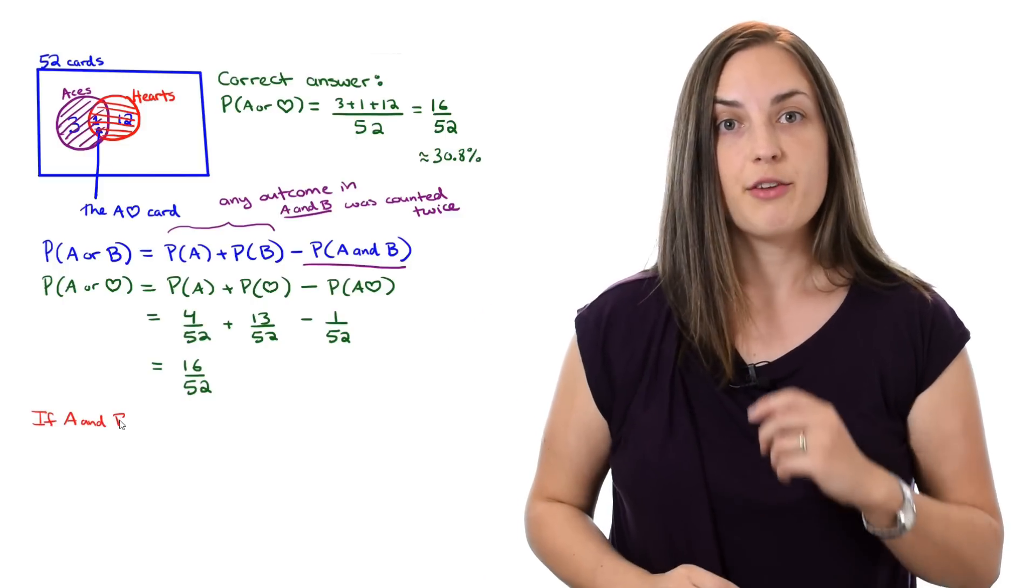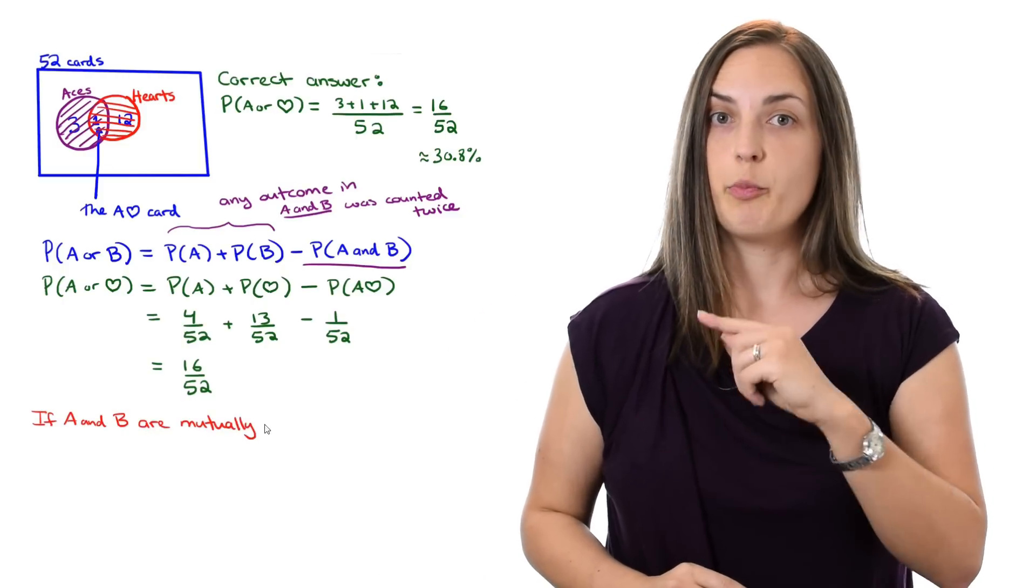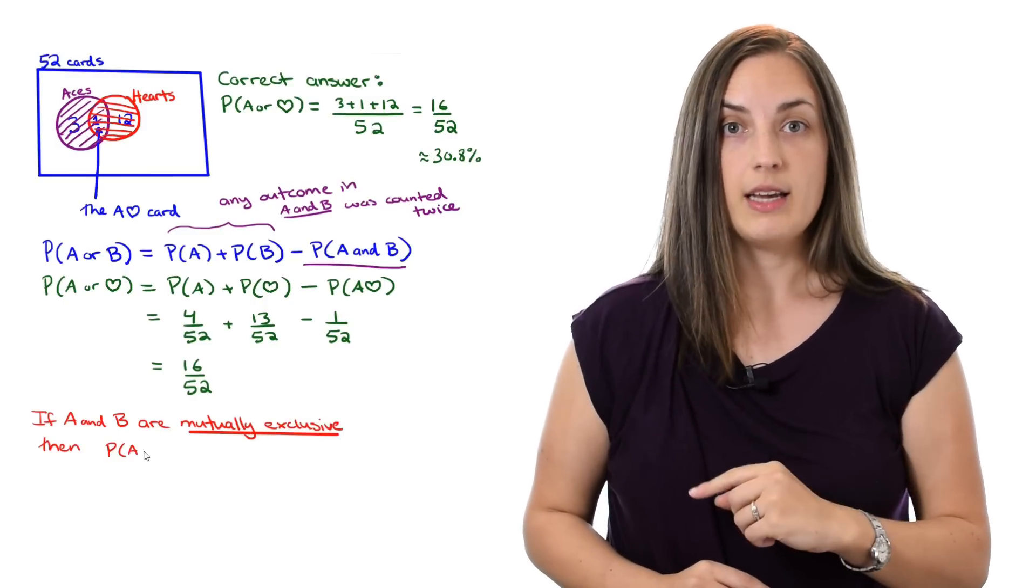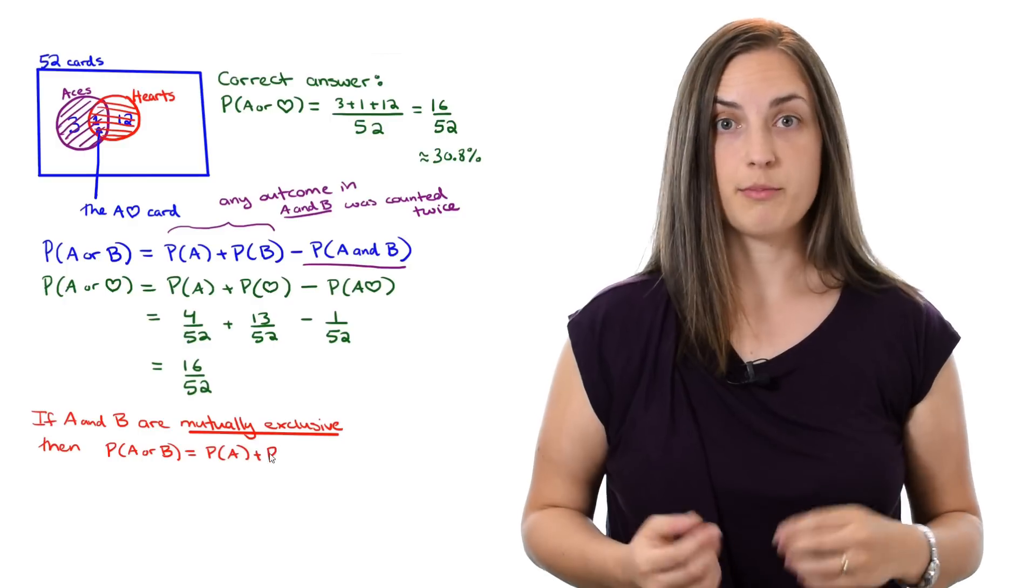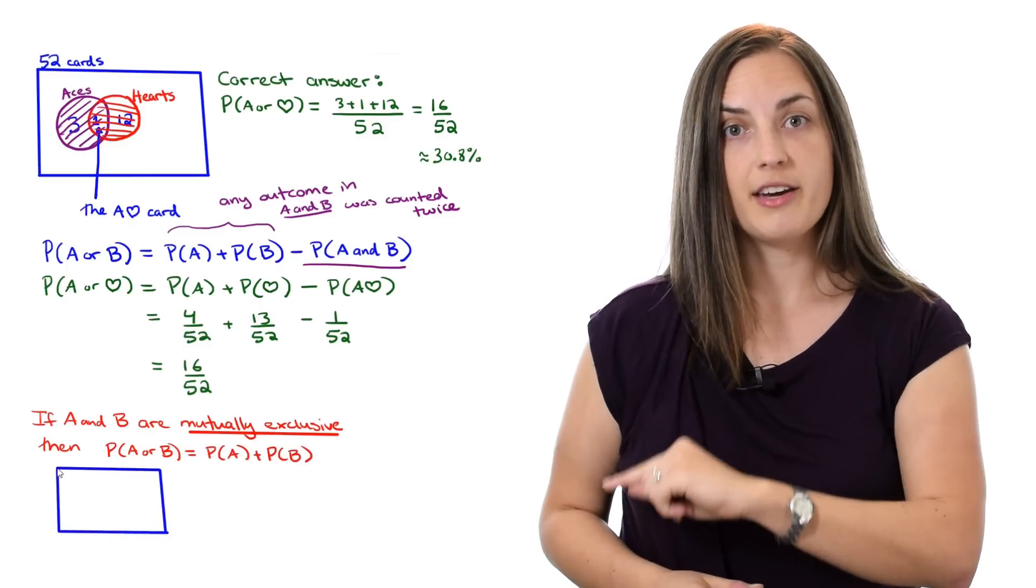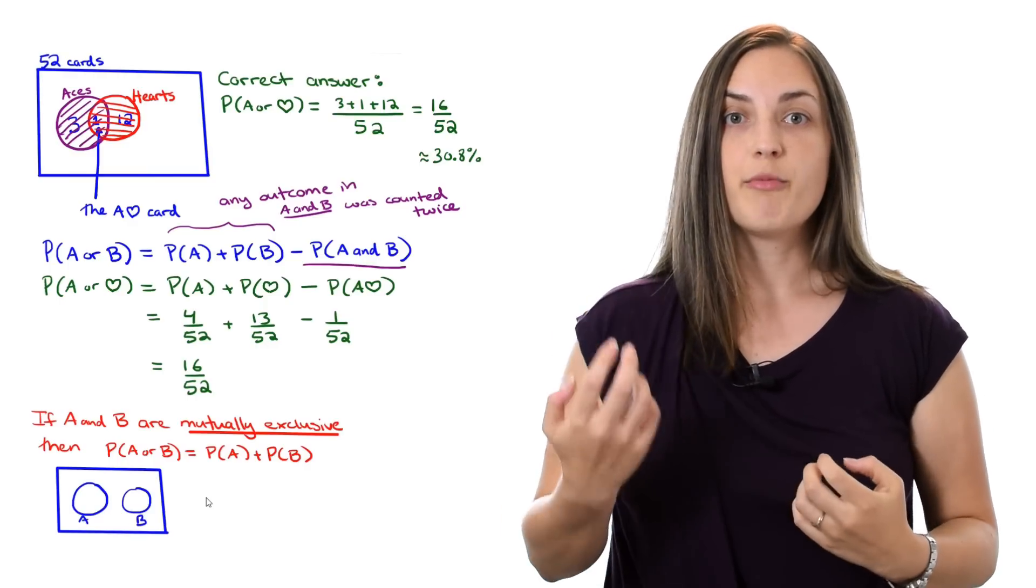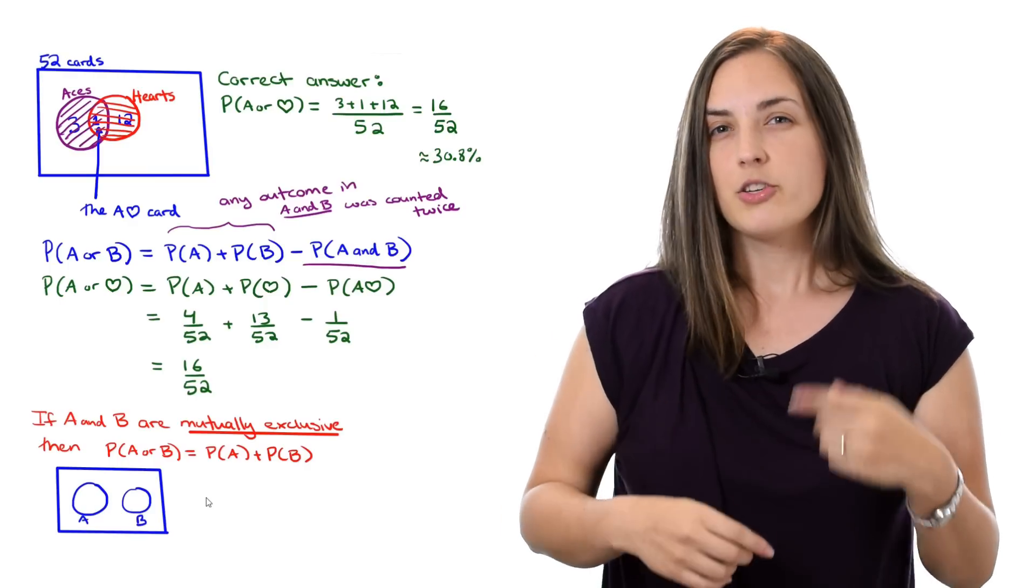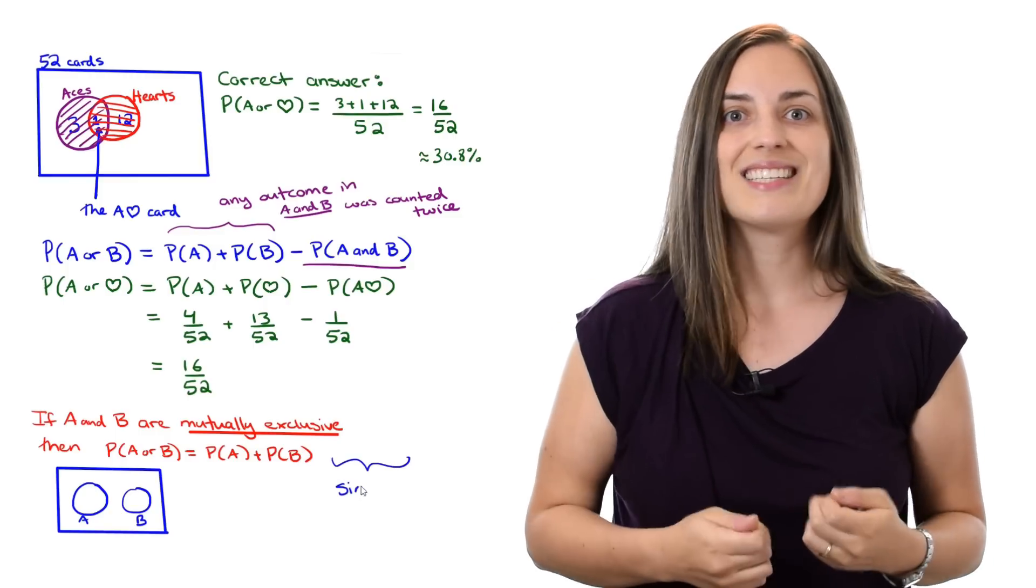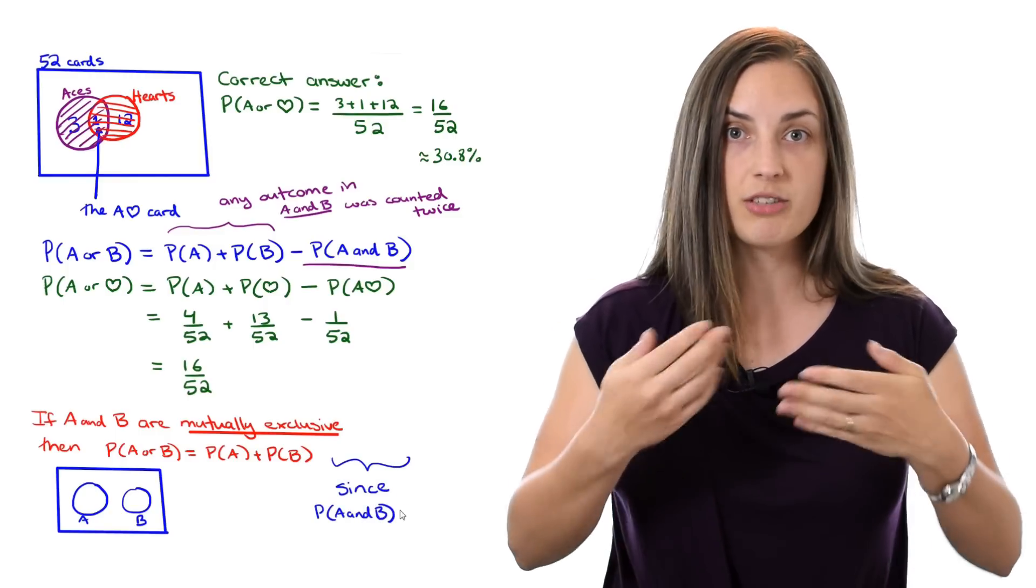So you may have heard that if you have two events A and B which are mutually exclusive, then the probability of A or B is equal to the probability of A plus the probability of B. The reason why this is is because if you think about the Venn diagram, mutually exclusive means that there's no overlap. So really all we're doing is using the regular old equation and just subtracting zero because their intersection is nothing.